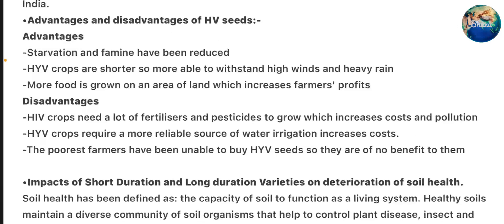Advantages and Disadvantages of high yield variety seeds. Advantages: Starvation and famine have been reduced. High yield variety crops are shorter so more able to withstand high winds and heavy rain. More food is grown per area of land which increases farmers' profits. Disadvantages: High yield variety crops require a lot of fertilizers and pesticides to grow, which increases cost and pollution. They require a more reliable source of water; irrigation increases cost. The poorest farmers have been unable to buy HYV seeds, so they are of no benefit to them.